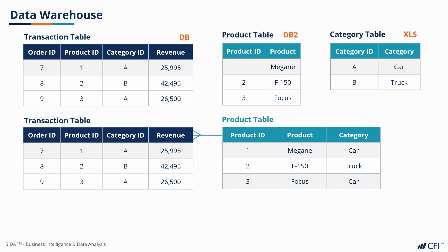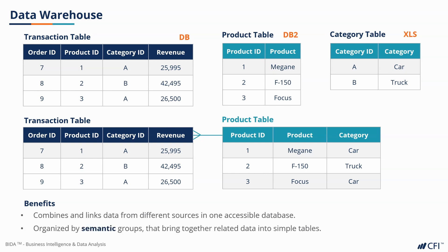There are two key benefits this data warehouse brings. First, it combines and links data from different sources in one accessible database. Second, its data is now organized by semantic groups that bring together related data into simple tables. For example, the product table is a semantic grouping of everything related to products. When doing analysis, it's simpler to look up a product category in the same table as a product name, and that organization makes our analysis simpler.